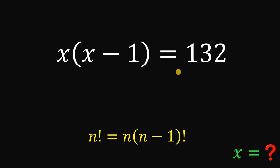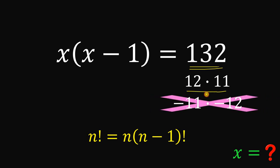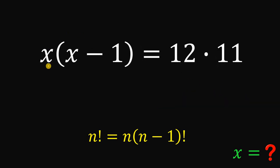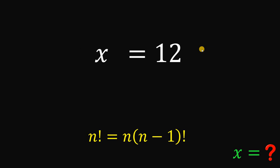We can use the quadratic formula or factoring for this kind of solution. Take note that 132 can easily be factored as 12 times 11, or negative 11 times negative 12 — but we want positive values, so we disregard the negative case. The right-hand side must equal 12 times 11. If x equals 12, then x minus 1 equals 11. So x must be equal to 12.